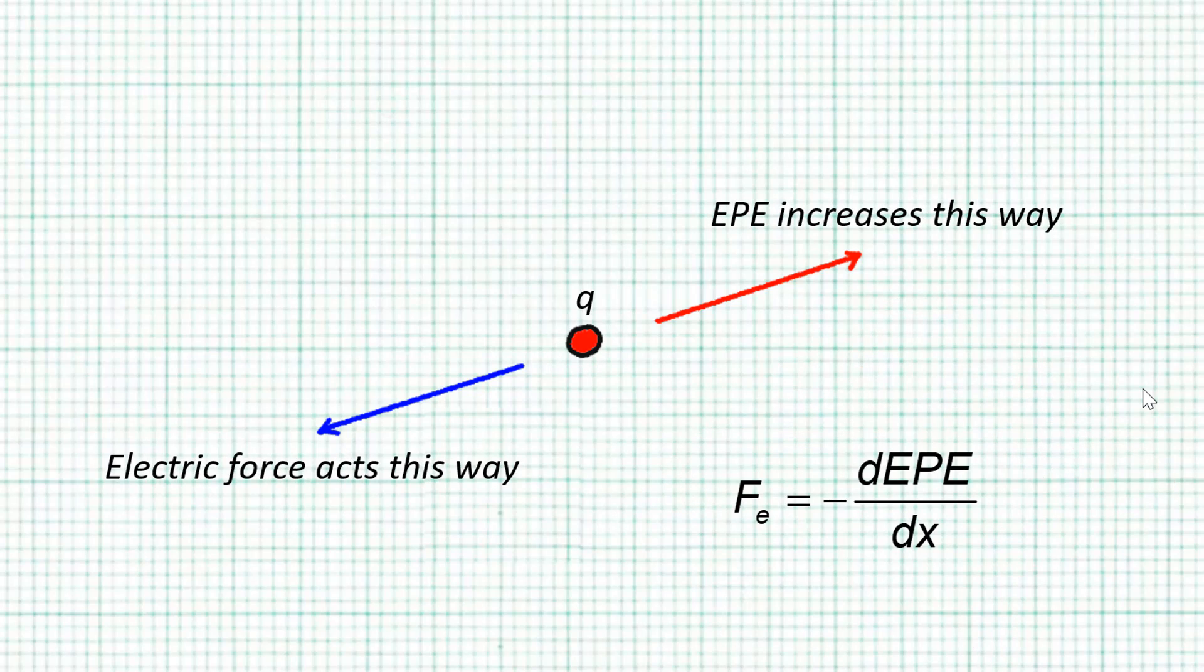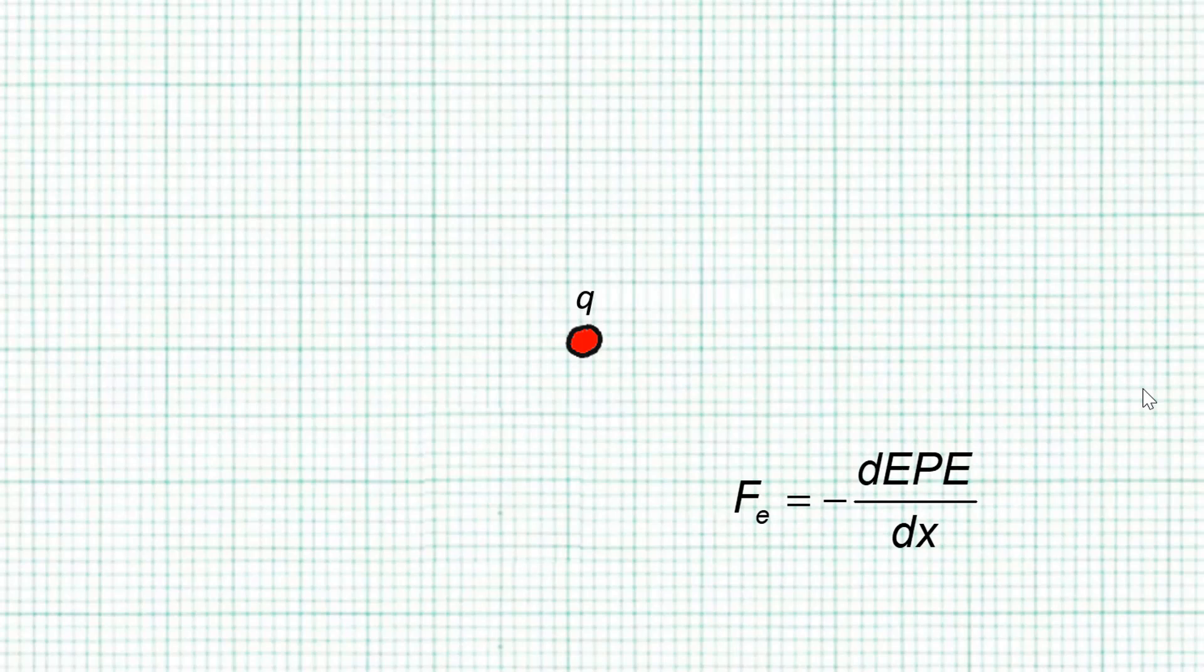Likewise, increasing EPE and electrical force always point in opposite directions. That's why there's a negative sign in the formula. Let me say it again. If the EPE of this charge increases this way, it must be because electrical force is trying to pull or push this charge the other way.